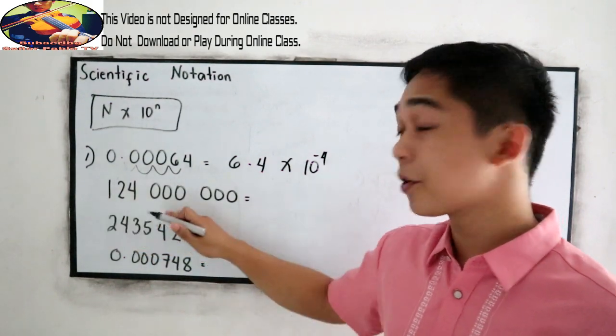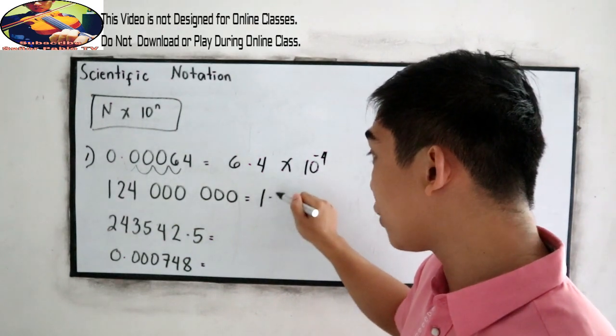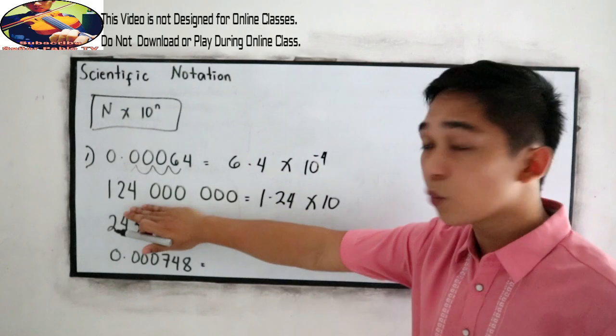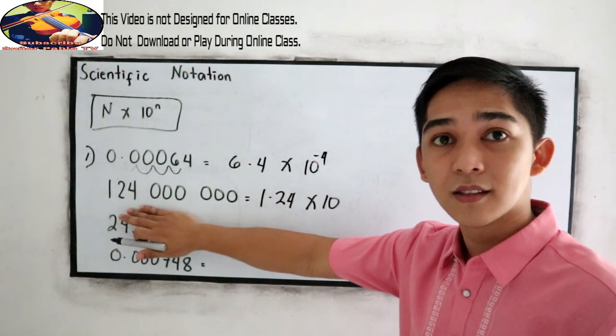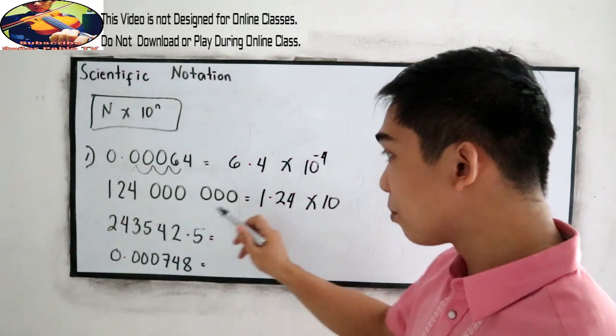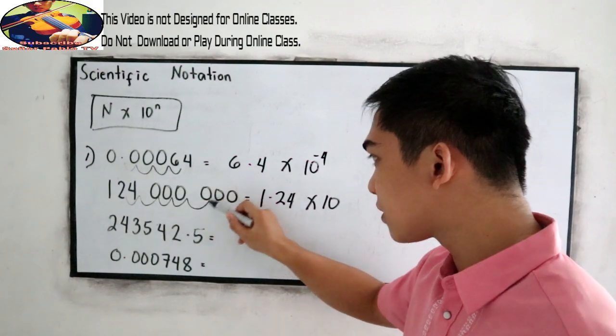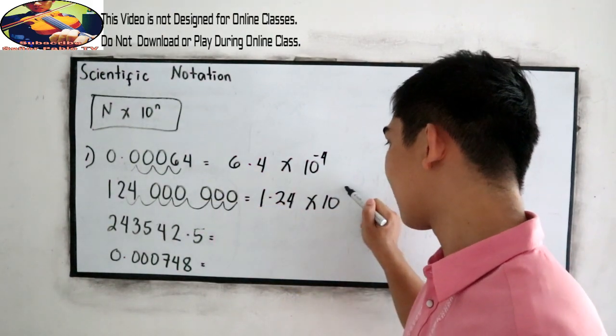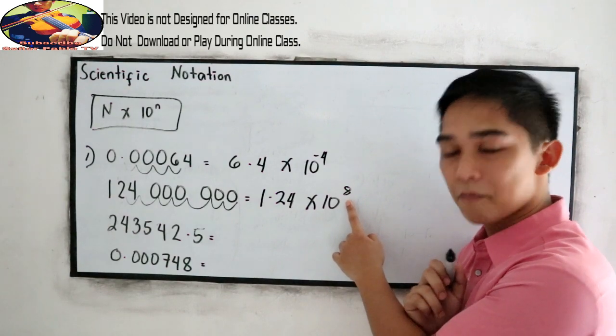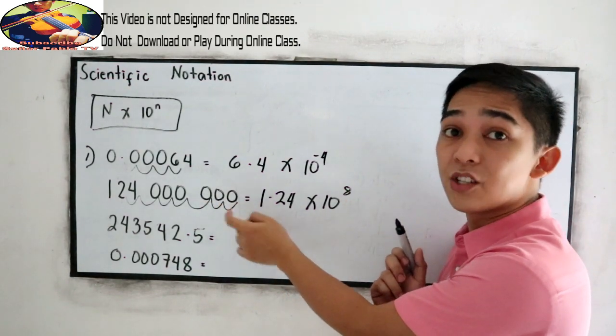Next, 124,000,000. So that can be written as 1.24 times 10. And we know that 124,000,000 is a large number. So times 10, we move the decimal point 1, 2, 3, 4, 5, 6, 7, 8. Is it positive or negative? Positive 8. Why? Because this number has a large volume.